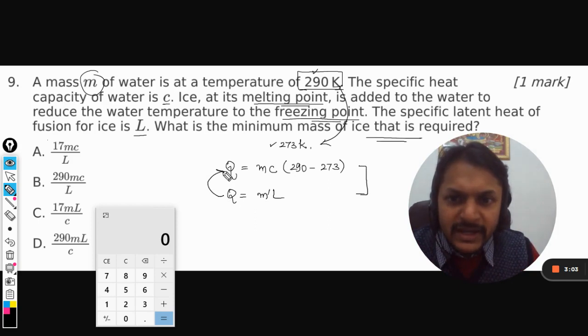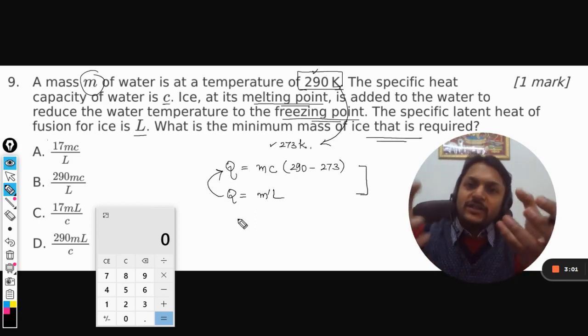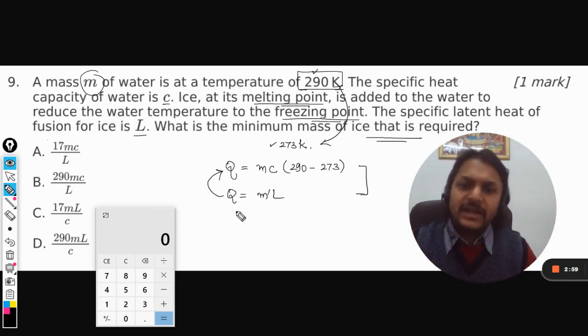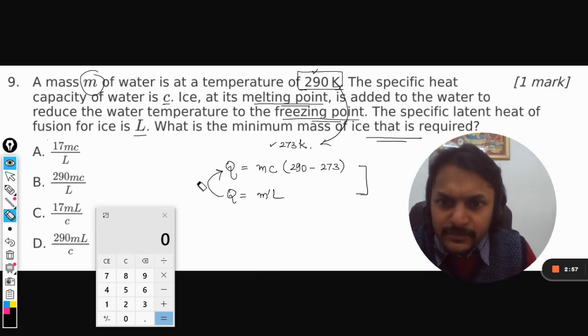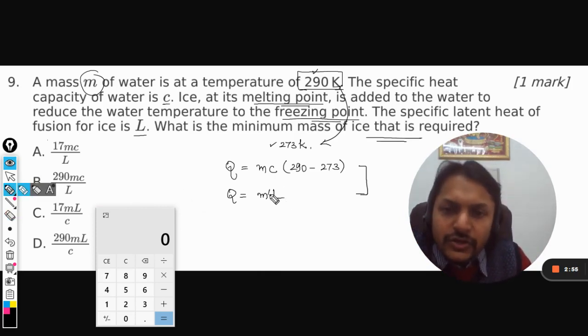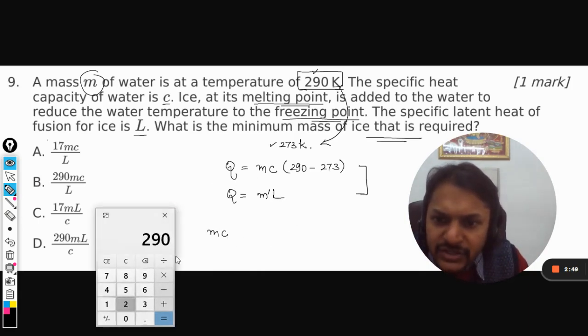We want that all the heat produced by the water should go to the ice. So we're now going to equate these two: m times C times (290 minus 273) which is 17, equals m dash times L.